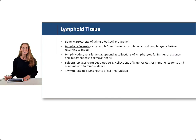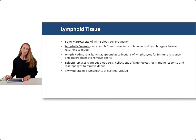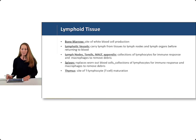The lymphoid tissues will be the subject of this lecture today, and they include the bone marrow, the lymphatic vessels, lymph nodes, tonsils, MALT or mucosa associated lymphatic tissue, the appendix, the spleen, and the thymus.